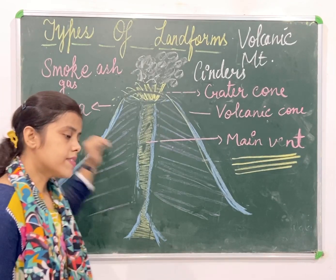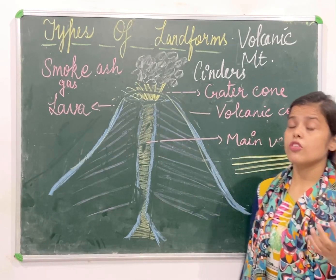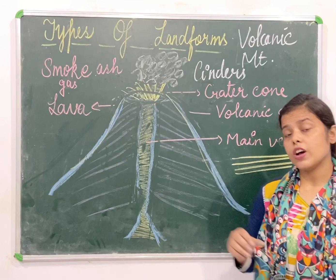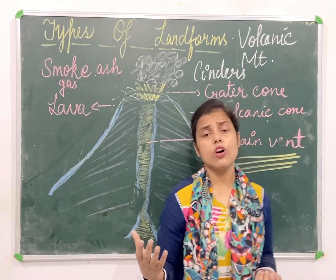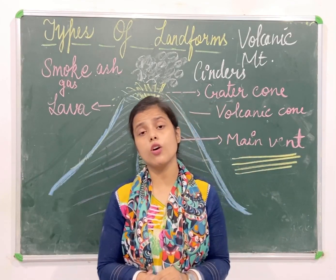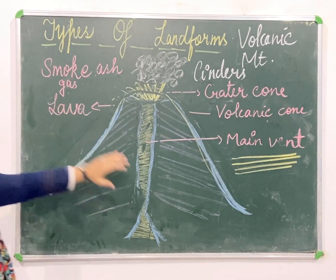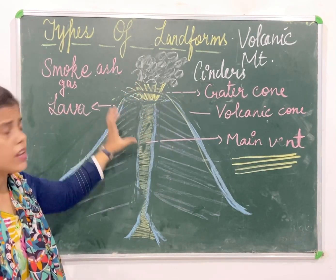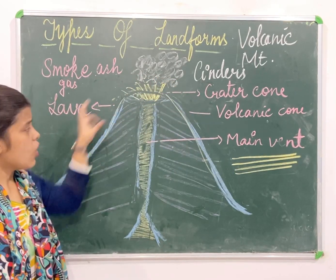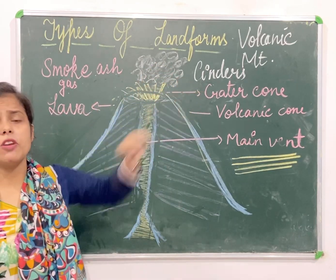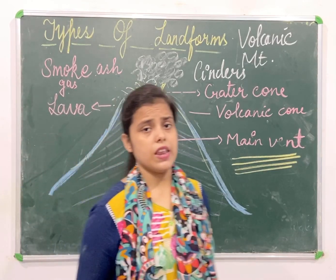Volcanic mountains give you black soil. Black soil is very helpful for growing cotton. Because of this volcanic activity — the gases, smoke, and ash produced — this whole process results in the formation of black soil around the volcanic mountain. Volcanic mountain is a type of landform.